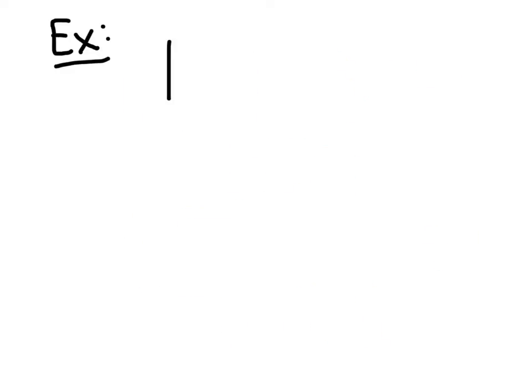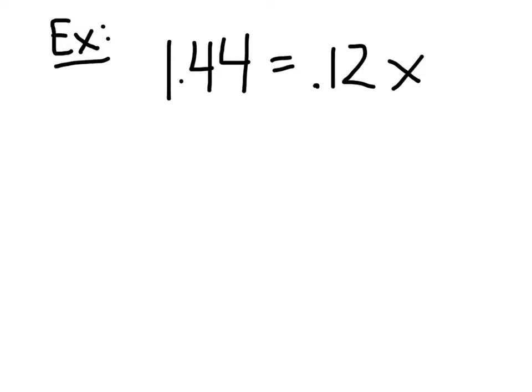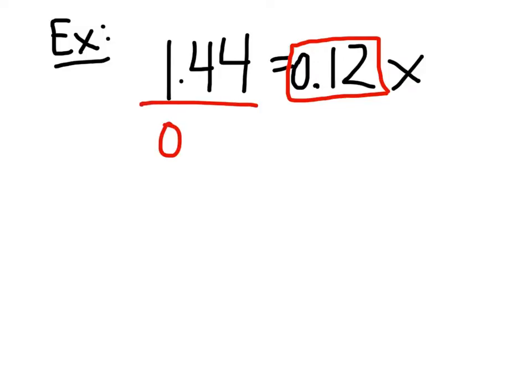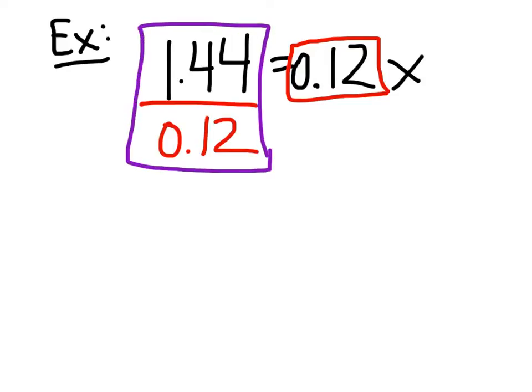Let's do one point four four equals zero point one two X. Now we have these decimals. What is the coefficient of X? Sierra? Point twelve. We're going to divide it over here and put that in the calculator. One point four four divided by point one two gives us X equals twelve.